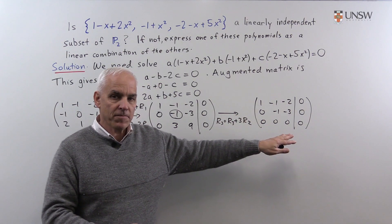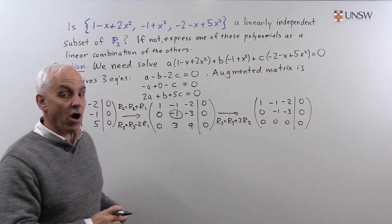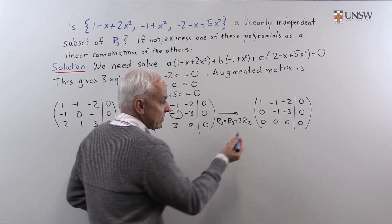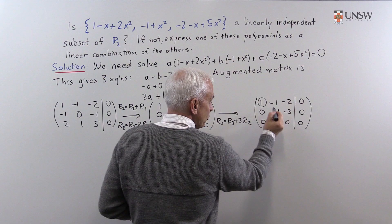It's now in row echelon form, and we can see that, in fact, there are solutions. How do we know that?